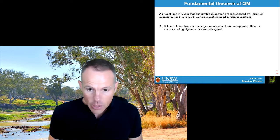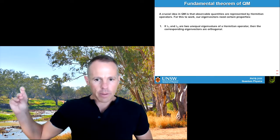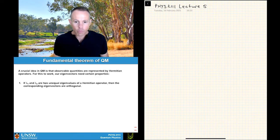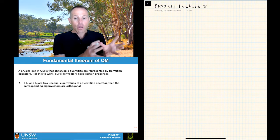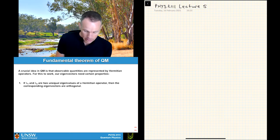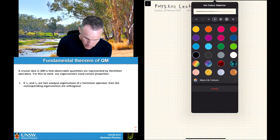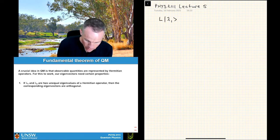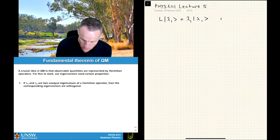The first point says that if lambda 1 and lambda 2 are two unequal eigenvalues of a Hermitian operator, then the corresponding eigenvectors are orthogonal. Let's go through and work this up. Where we're going to start is with eigenvalue equations. We'll put them down for the two unequal eigenvalues in this particular case. So we'll write: L|lambda 1⟩ = lambda 1 |lambda 1⟩. That's equation 1. What that says is that if |lambda 1⟩ is an eigenvector of the matrix operator L, we get that eigenvector back multiplied by a number — the corresponding eigenvalue.